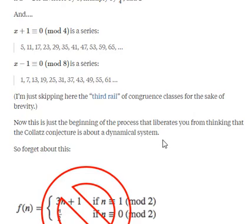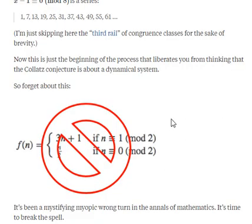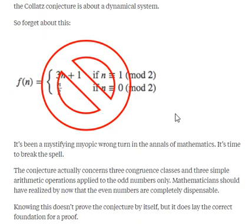So this is just the beginning of a process that liberates you from thinking that the Collatz conjecture is about a dynamical system, which is what academic mathematicians believe it is, a dynamical system which suggests a level of unpredictability, but just isn't the case. This seems to be like a huge wrong turning in the annals of mathematics.